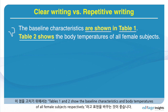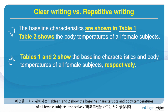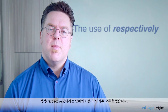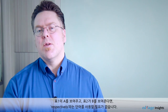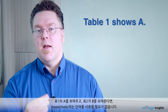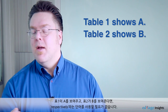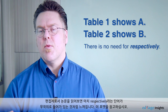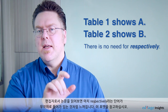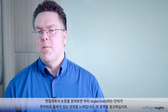An easy fix is to say: tables one and two show the baseline characteristics and body temperatures of all female subjects, respectively. However, the use of 'respectively' is itself another common error. If table one shows A and table two shows B separately stated, there is no need for 'respectively.' As an editor reading papers, I see 'respectively' placed in almost random locations.